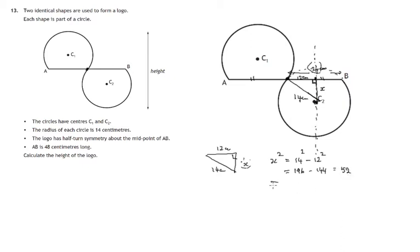So x would be the square root of 52. I'm just going to leave it as that just now. So that's the square root of 52, wherever that comes to, centimetres. Now look at this part of this axis of symmetry of this right-hand circle. That's another radius. So that's 14 centimetres.